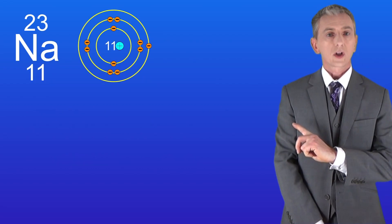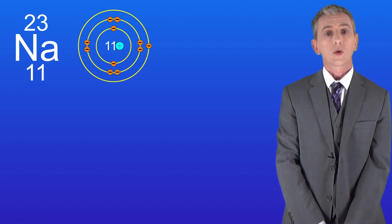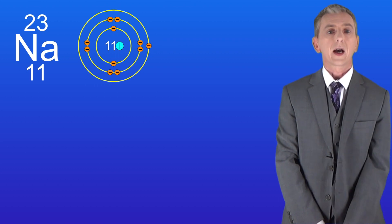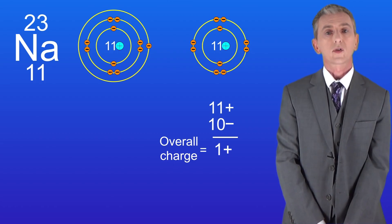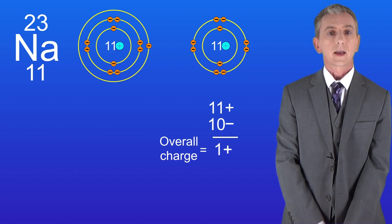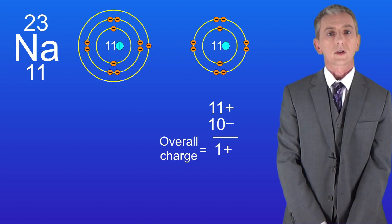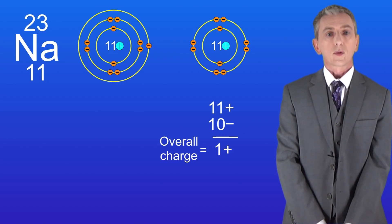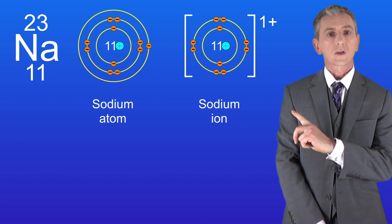This shows the sodium atom again, so I'd like you to pause the video and draw the structure of the sodium ion, which is formed when the atom loses its one outer electron. In the sodium ion we still have 11 positive protons in the nucleus, but now we only have 10 negative electrons. This means there's now an overall charge of one positive. We show this with square brackets and we now call this a sodium ion.